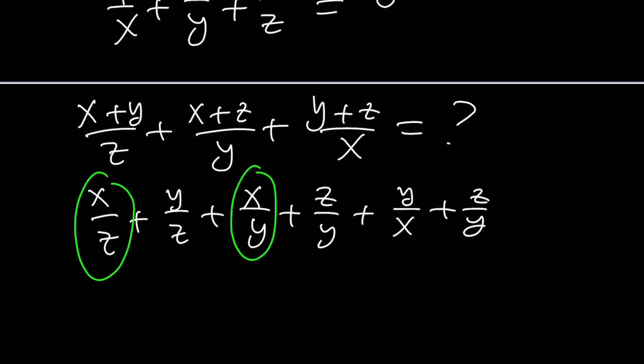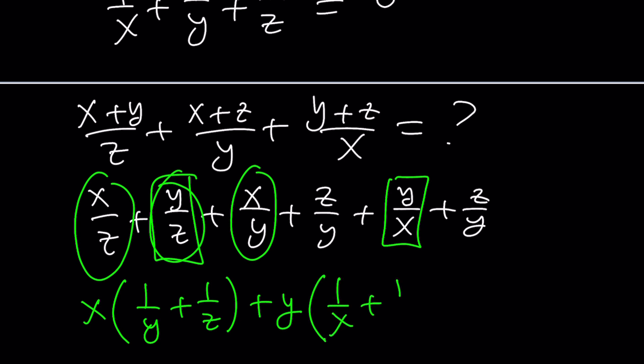Now here's the fun part. You can go ahead and pick the two terms that have the same numerator, like this one and this one, factor out an x and you can write the rest as 1/y plus 1/z and then you can take the y times 1/x plus 1/z and finally this one and this one would be z times 1/x plus 1/y.